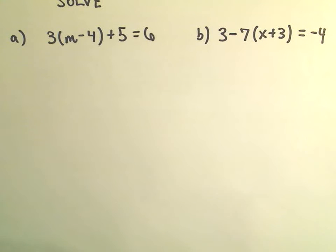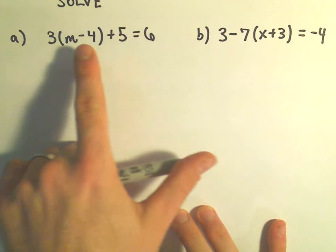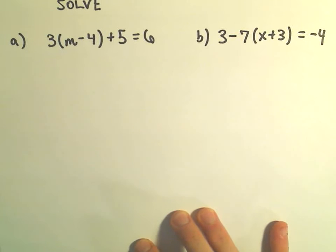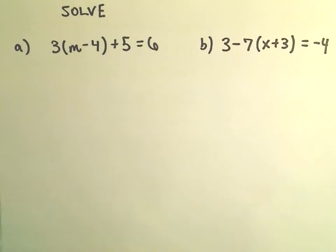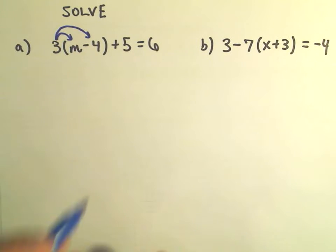Okay, so any time I have a linear equation I have to solve, and if there are any parentheses involved, so notice we have parentheses in both of these, the very first thing I do is try to get rid of the parentheses. So in this case we're going to have to distribute the 3 to the m and the 3 to the negative 4.